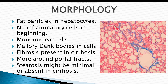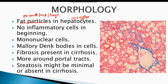The histological picture reveals hepatocytes laden with fat particles, which could be small, medium, or large. Hepatocytes are also swollen. As you can see, these are the small hepatocytes, and these are the medium and large hepatocytes. In the beginning of the disease, there is an absence of inflammatory cells and no necrosis. The disease is only limited to lipid deposition inside the hepatocytes.